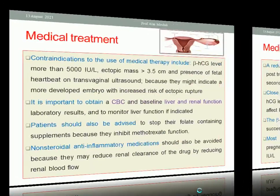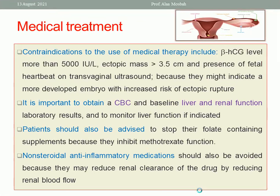Contraindications to methotrexate include: beta-hCG higher than 5000 IU/L, ectopic mass more than 3.5 cm, or fetal heartbeat on transvaginal ultrasound — as these indicate a more developed embryo with increased risk of rupture.